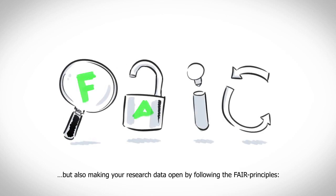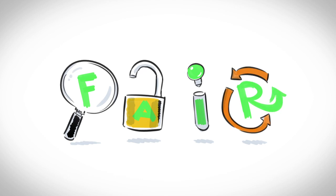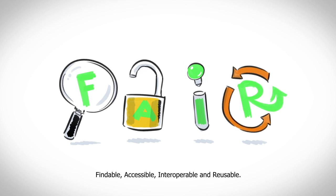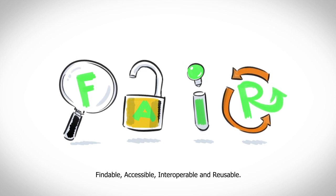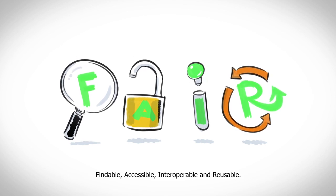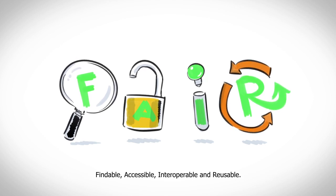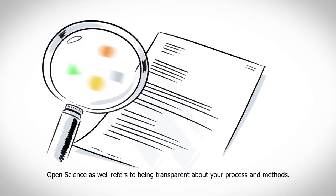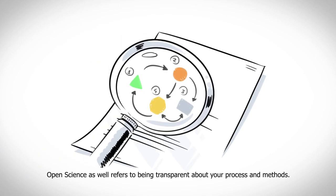This is done by following the FAIR principles: Findable, Accessible, Interoperable, and Reusable. Open science also refers to being transparent about your process and methods.